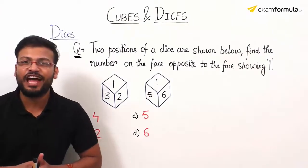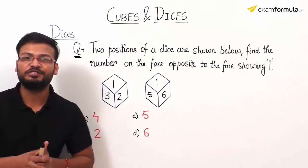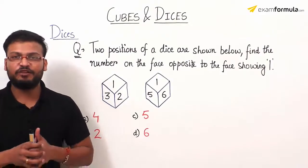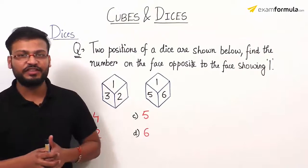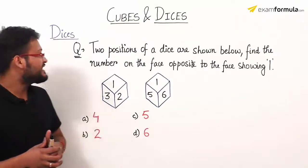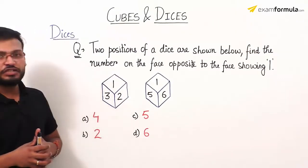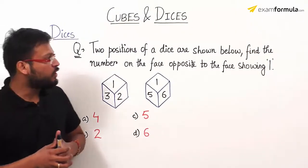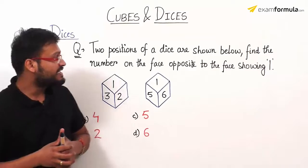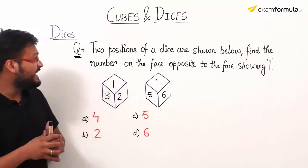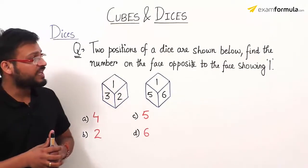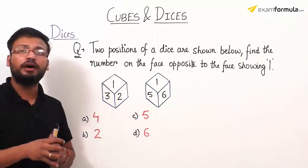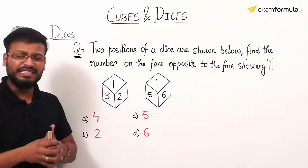Now let us try out our hand on some questions related to dice. Let us consider the first question. It says that two positions of a dice are shown below. It is asking us to find the number on the face opposite to the face showing the number 1.